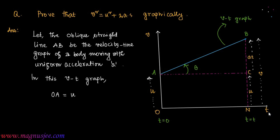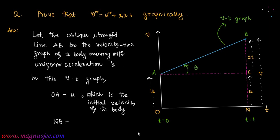In this velocity-time graph, OA = u, which is the initial velocity of the body, and NB = v, which is the final velocity of the body.